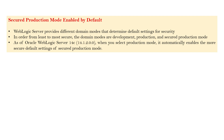As of WebLogic Server 14.1.2, when you select production mode, it automatically enables the more secure default settings for secure production mode. That means when you configure your domain and select production mode, the secure production mode will get enabled by default — your domain will be configured with certificates and SSL ports. This will be demonstrated in the practical implementation in upcoming sessions when we configure the domain.